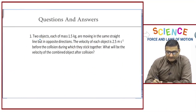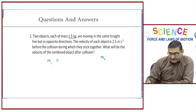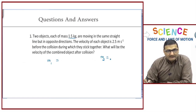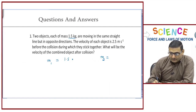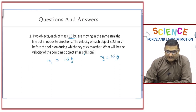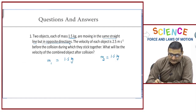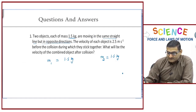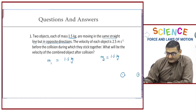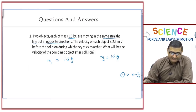Two objects each of mass 1.5 kilograms. Let the mass of the first object be m1 and the second object be m2. The masses are equal — 1.5 kilograms each. They are moving in a straight line but in opposite directions. Object one is moving to the right and object two is moving to the left, along the same line but in different directions.